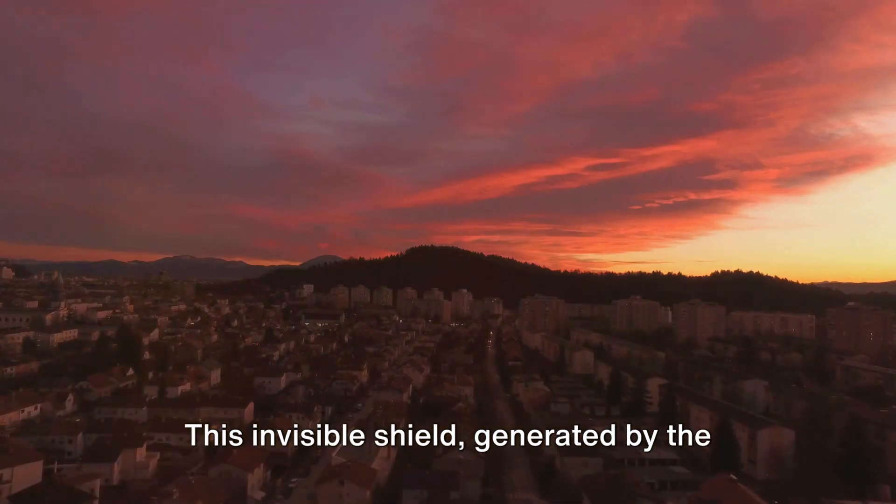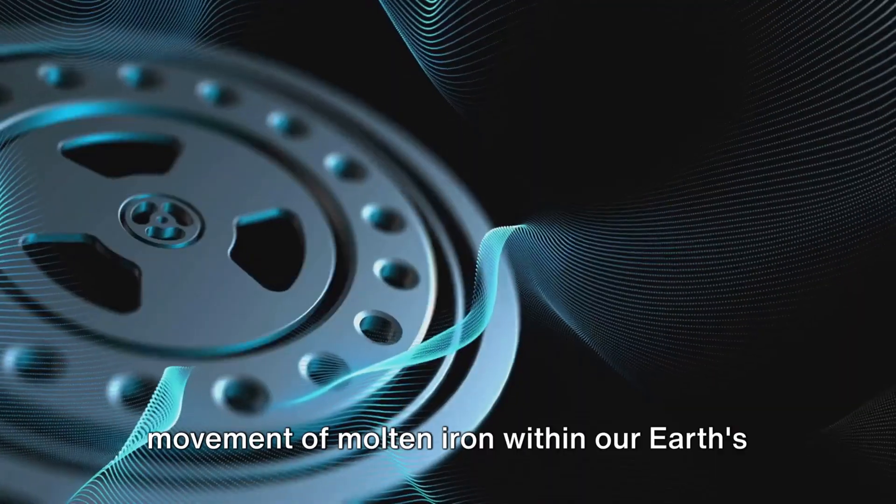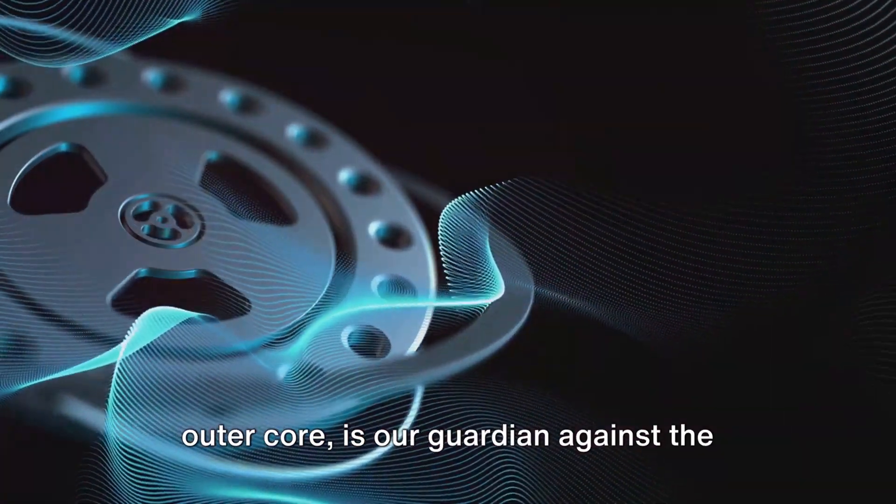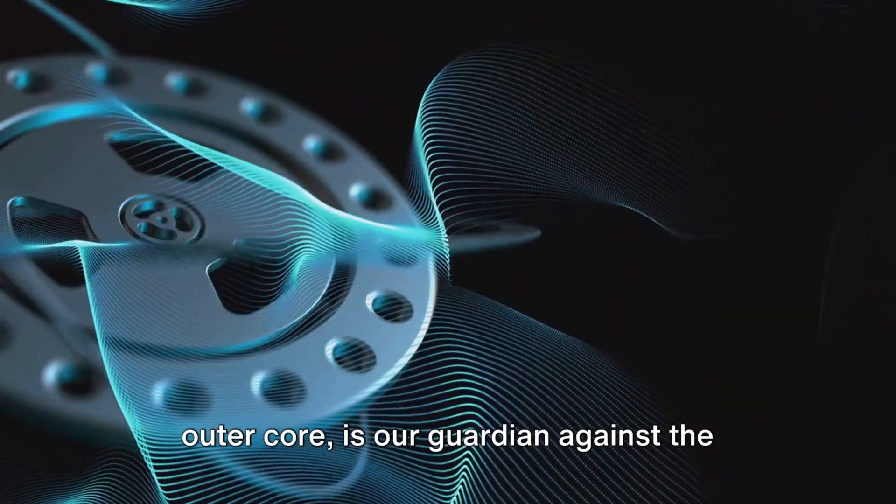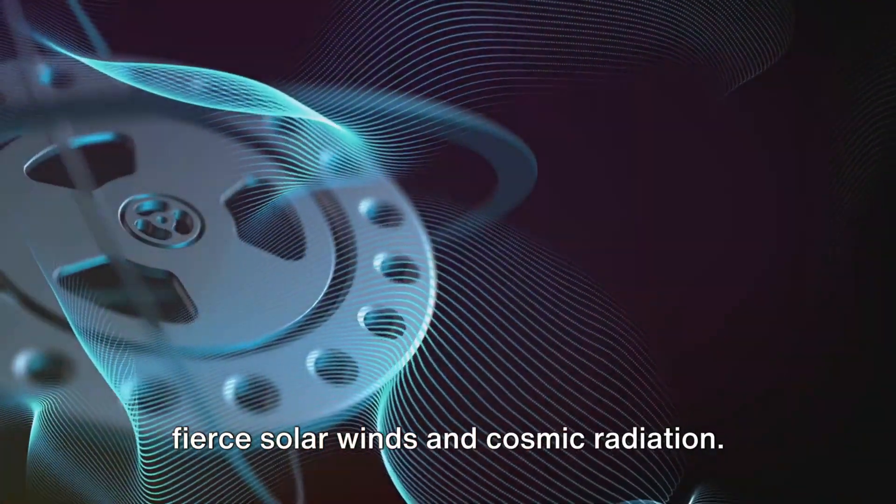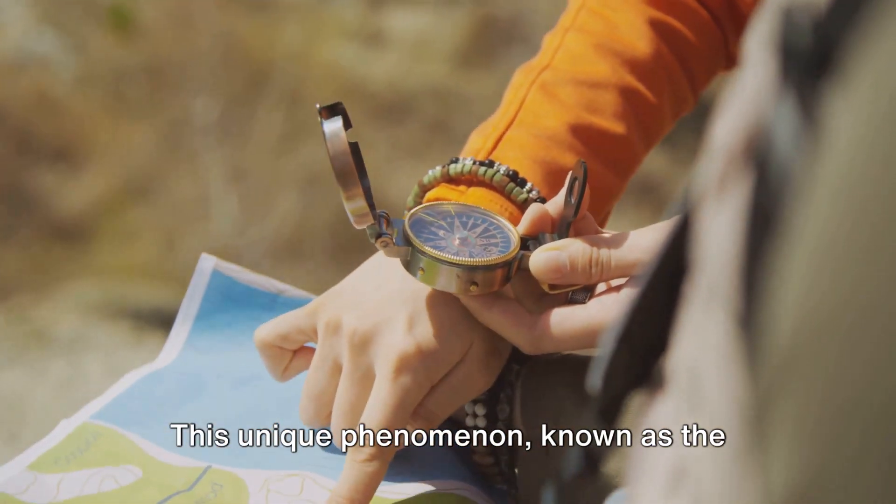on our planet. This invisible shield, generated by the movement of molten iron within our Earth's outer core, is our guardian against the fierce solar winds and cosmic radiation.